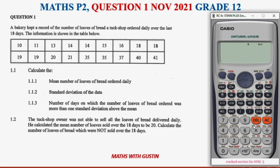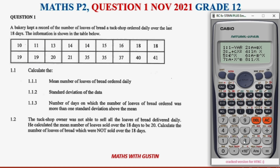Here we go. We've got our calculator here. First thing first, we need to choose the statistics mode. We do that by pressing Mode and Setup, then go to Stats — Stats is option 3. Select option 3, then choose the type of data. We don't have x and y data, so it's not option 2 but option 1, which is for one variable or variance — just one set of data.